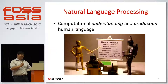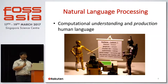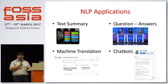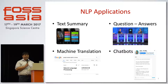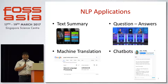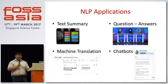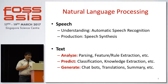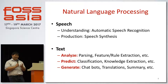NLP is the computational learning of language by the computer, as well as trying to produce it. There are various applications like text summarization, question answering — Watson, Google Translate, which is close to what I work with — and chatbots. There's a really cool one that tells you about housing prices and where to buy houses.